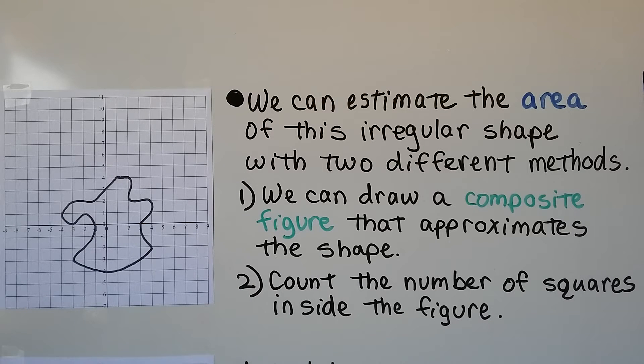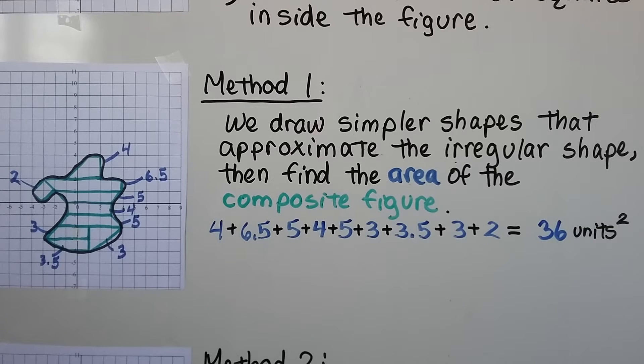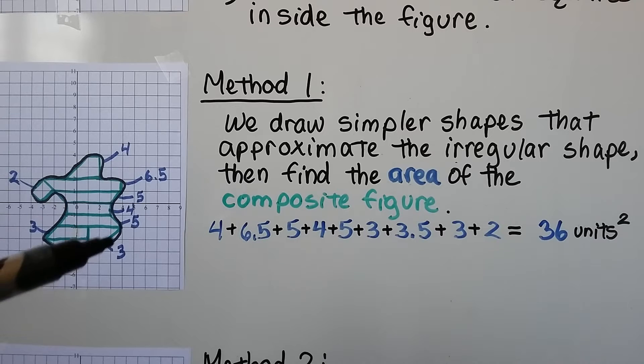Another way is we can count the number of squares inside the figure. So for our first method, we draw simpler shapes that approximate the irregular shape, then find the area of the composite figure. You can see there was a curve here, but I went straight down. And there's a curve here, and I went straight across to make a triangle. We can add up all the areas of all the smaller parts, and we get 36 units squared.